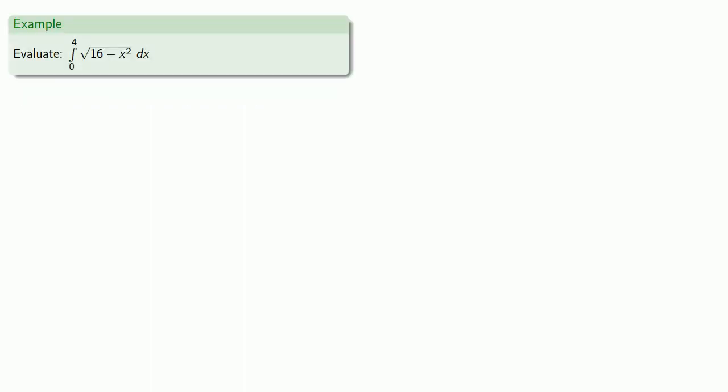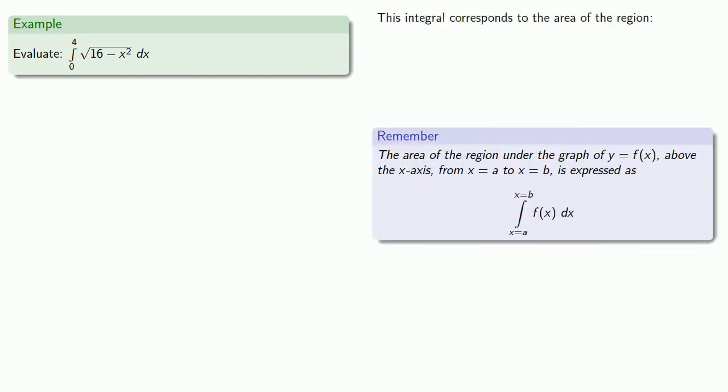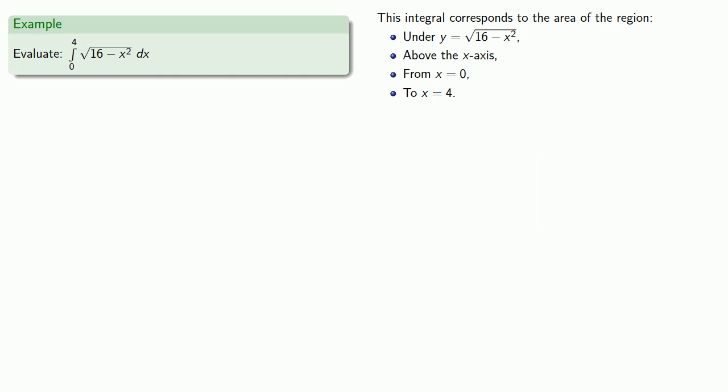For example, suppose I want to find the definite integral from 0 to 4 of square root 16 minus x squared. This integral corresponds to the area of the region that's under y equals square root 16 minus x squared, above the x-axis, from x equals 0 to x equals 4. And this region looks like...